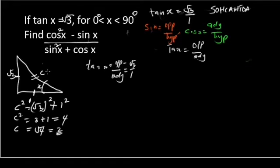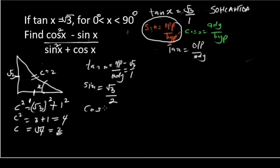Now if C equals 2, then I can now define my sine and my cosine. Remember that our sine is opposite over hypotenuse. So the sine of x from this place will be equals to root 3, which is the opposite, over the hypotenuse, which is 2. And also the cos of x will be equals to the adjacent, which is 1, over 2.